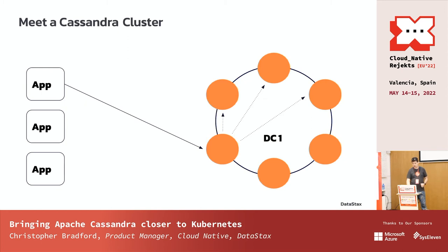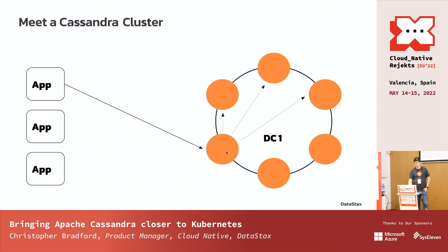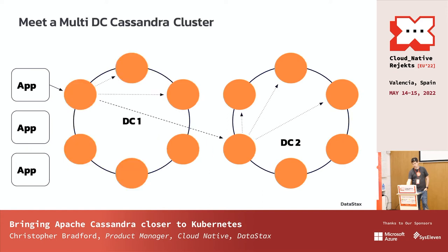Whichever node receives that request is known as the coordinator node — it's responsible for coordinating that query, and any node can be a coordinator. There are smart bits inside of the driver to make sure we route directly to a replica to avoid extra network hops. If I choose a coordinator node that doesn't have the data, it still knows where that data lives and forwards it to the appropriate nodes.